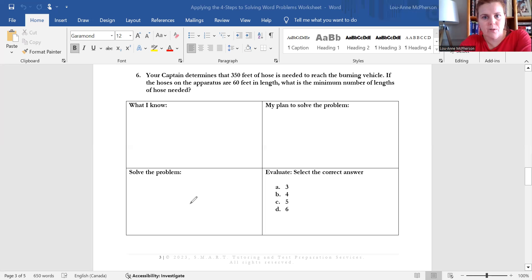It says your captain determines that 350 feet of hose is needed to reach the burning vehicle. If the hoses on the apparatus are 60 feet in length, what is the minimum number of lengths of hose needed? So the first thing you want to do is identify the type of math that you're working with. Here we can see that we're working with whole numbers. And then you want to identify the operation. If it's not clear to you, draw it out. So again, we've got a length of hose to create and we need 350 meters of it. We're going to create that distance using 60 foot lengths. Now anytime you see a whole number being divided into equal parts or being cut up into equal parts, that's going to indicate division. So we're going to be dividing whole numbers.